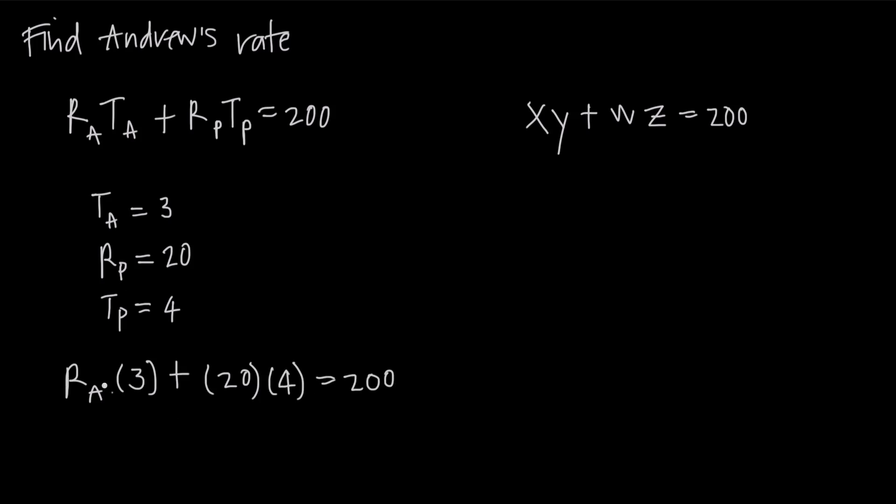Now we just solve. We say r sub a times 3, we can call it 3 r sub a. 20 times 4 is 80, so we get plus 80 equals 200. When we subtract 80 from both sides to remove the positive 80 on the left, we have to do it to both sides to keep the equation balanced. We're left with 3 r sub a equals 200 minus 80, which is 120.